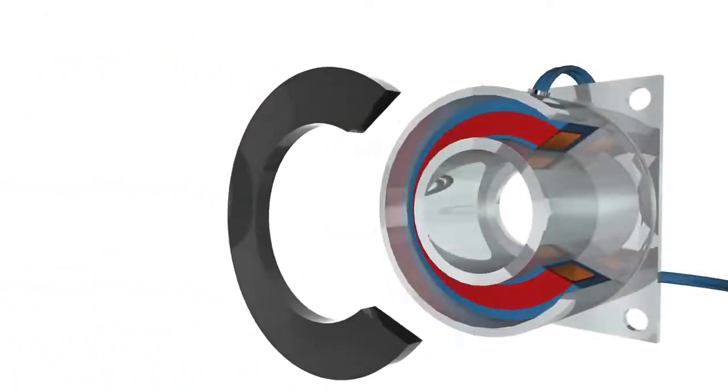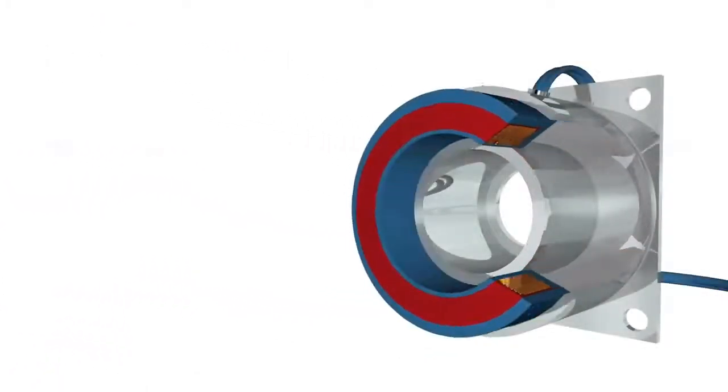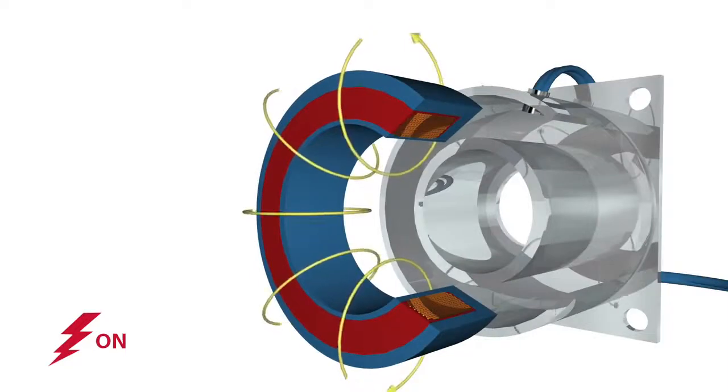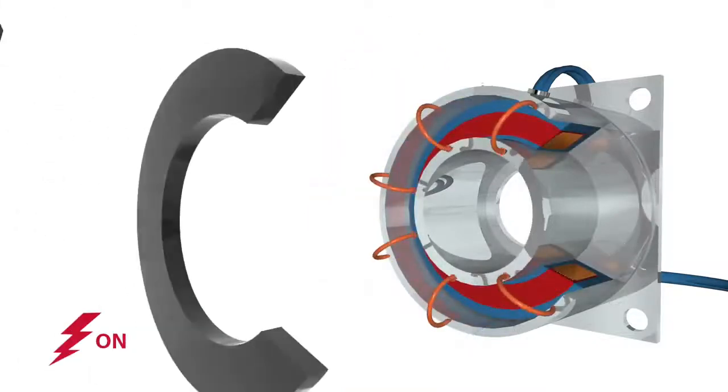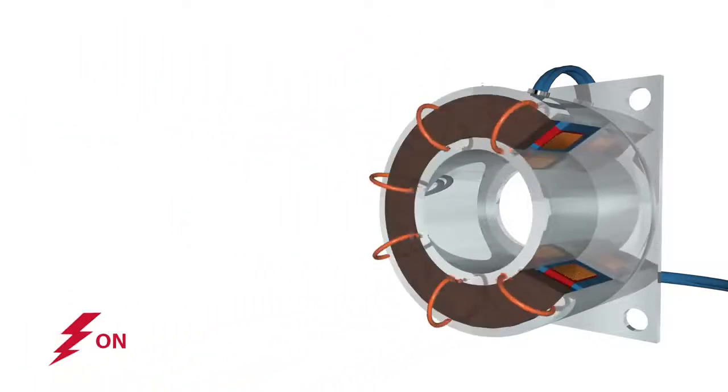Electromagnetic brakes operate via an electric actuation but produce torque mechanically. When voltage or current is applied to the brake, the coil becomes an electromagnet and produces magnetic lines of flux.